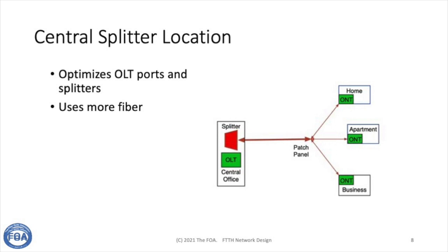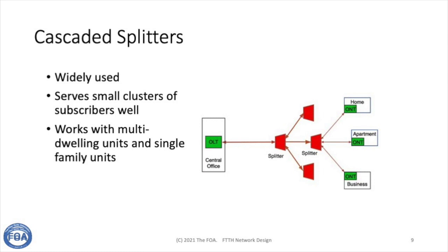Some users decide to put the splitter in with the OLT in the central office or head end. Mainly, it allows management of the network much more easily. It means you have to send a fiber to every subscriber, but with high fiber count fiber optic cables, putting 1,728 fibers in a single cable that you can pull through conduit in the city is not a problem. Where you do have the splitter near the OLT, you can more carefully manage OLT ports and get higher density to each OLT port, which can make a big difference in the cost of the network.